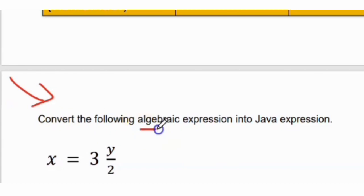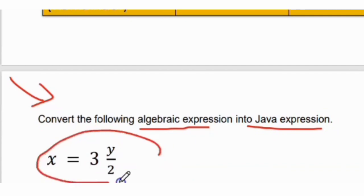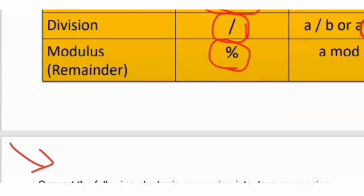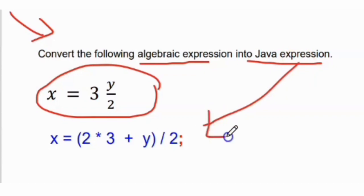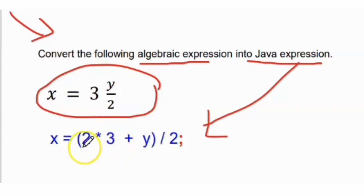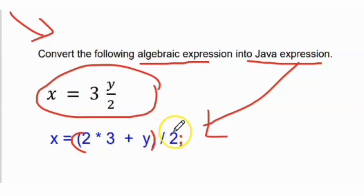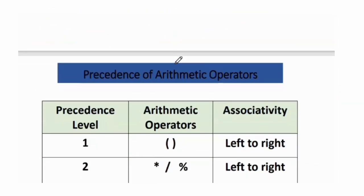Convert the following algebraic expression into a Java expression. For example: X = 2 * 3 + Y, with brackets, divided by 2.